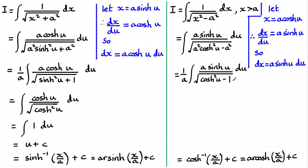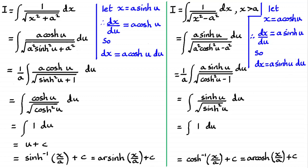The a's cancel, and cosh²(u) − 1 equals sinh²(u), from the identity cosh²(u) − sinh²(u) = 1. So the denominator becomes the root of sinh²(u), which is sinh(u). This reduces to the integral of 1 with respect to u, giving u plus constant c. Since cosh(u) = x/a, we get u = arcosh(x/a), so the result is arcosh(x/a) + c.